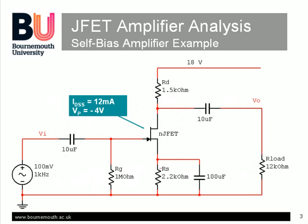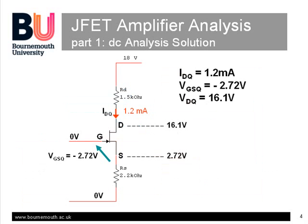This is the circuit example we'll be analyzing. The JFET parameters are the Saturation Drain Current, IDSS, which is 12 milliamps in this case, and the Pinchoff Voltage, VP, which is minus 4 volts. This slide shows the results of the DC analysis from part 1. The bias on the gate is minus 2.7 volts, which produces a DC drain current of 1.2 milliamps. The potential gradient formed by the drain current gives a drain voltage of 16 volts and the source at 2.7 volts with 0 volts on the gate.